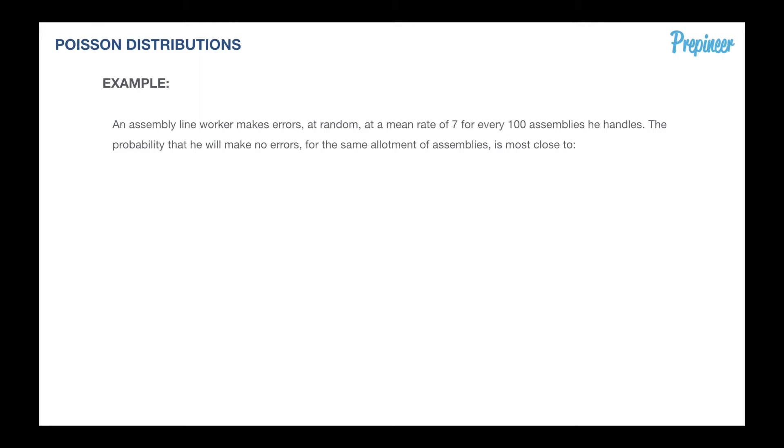This practice problem says: an assembly line worker makes errors at random at a mean rate of seven for every 100 assemblies he handles. The probability that he will make no errors for that same allotment of assemblies is most close to what?